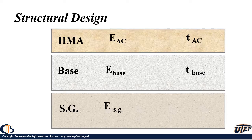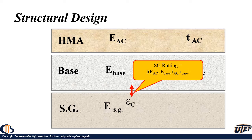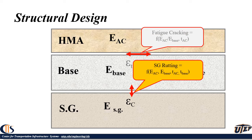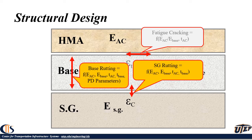The next step was looking at structural design — specifically how to control rutting and cracking. Traditionally, cracking is governed by tensile strength at the bottom of the asphalt, and rutting by compressive strength at the top of the subgrade. We were also interested in rutting of the base itself, so we used permanent deformation properties and the VESIS program to analyze permanent deformation of different layers.